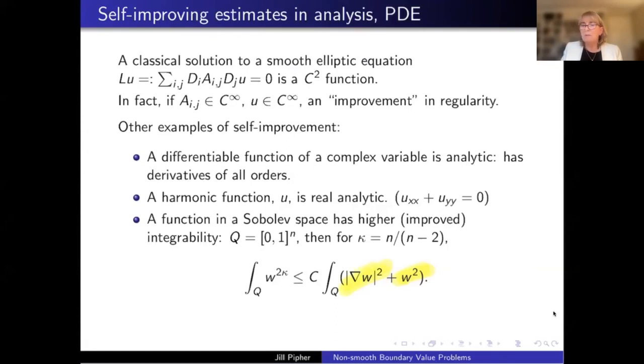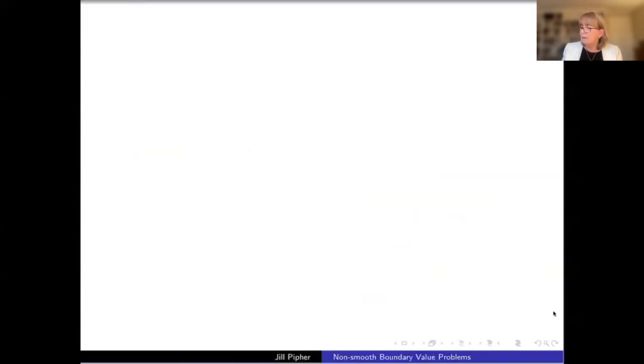And so what this self-improving inequality says is that if you have a function which is square integrable, but it has a weak derivative that is also square integrable, you can get some higher power of integration here. That's the self-improving. And so this notion of weak derivatives turns out to be really important because it allows you to define something called weak solutions, which gives you a sort of leg up, a starting point when you're trying to solve your PDE.